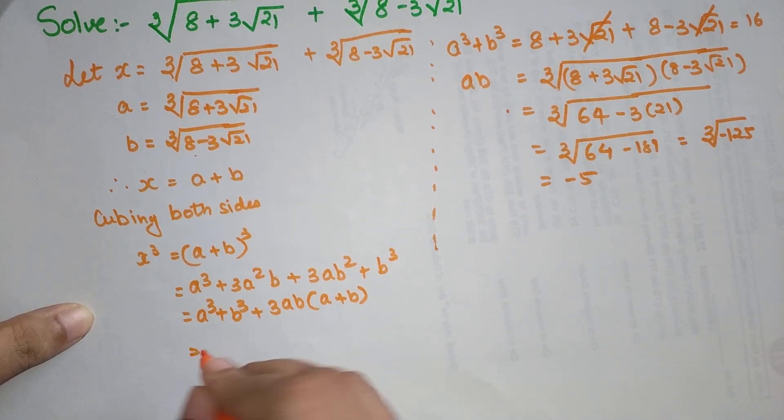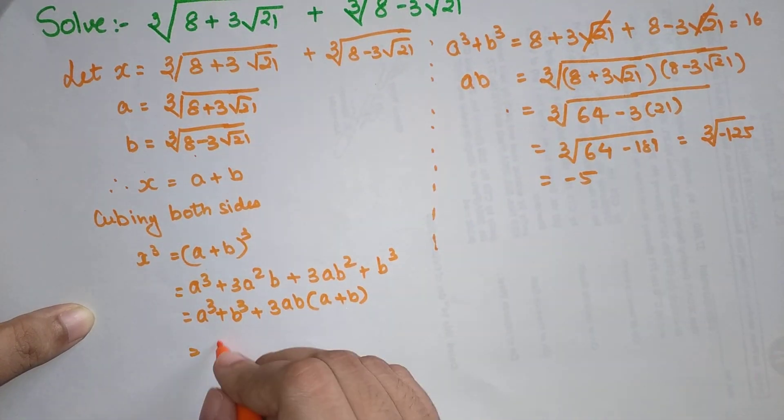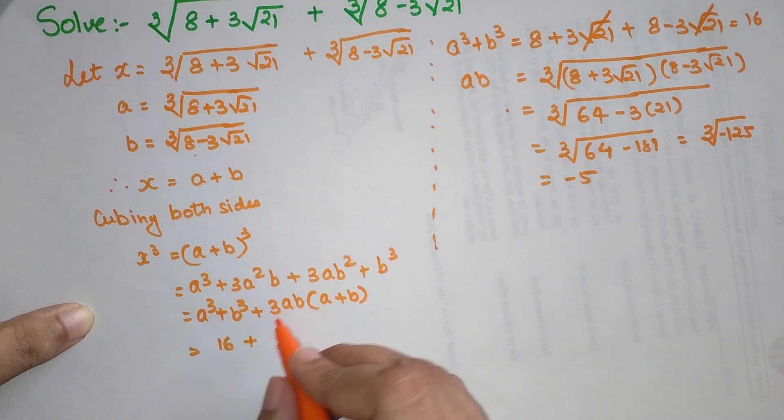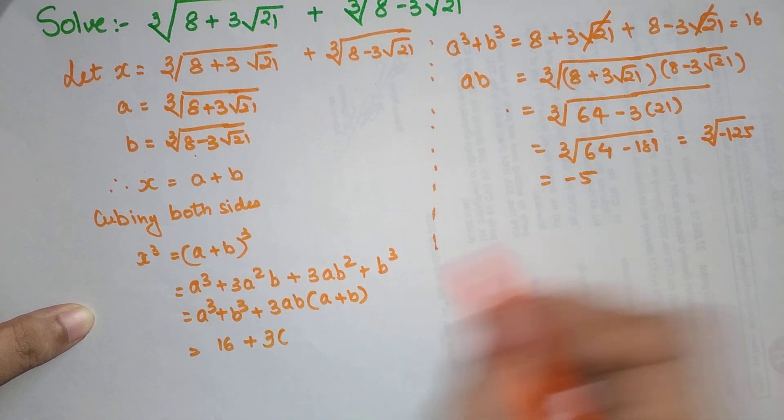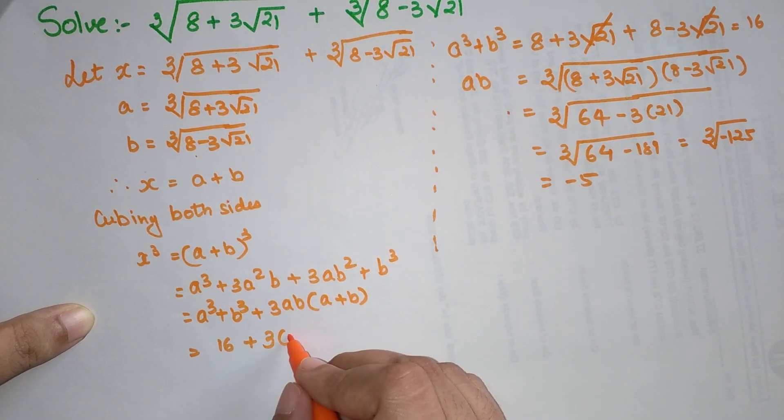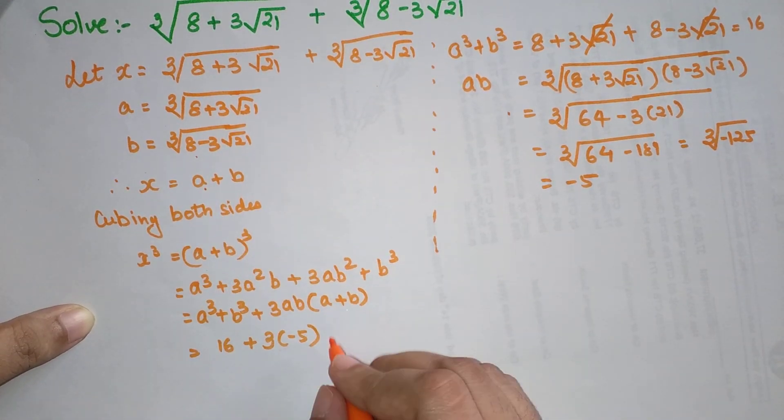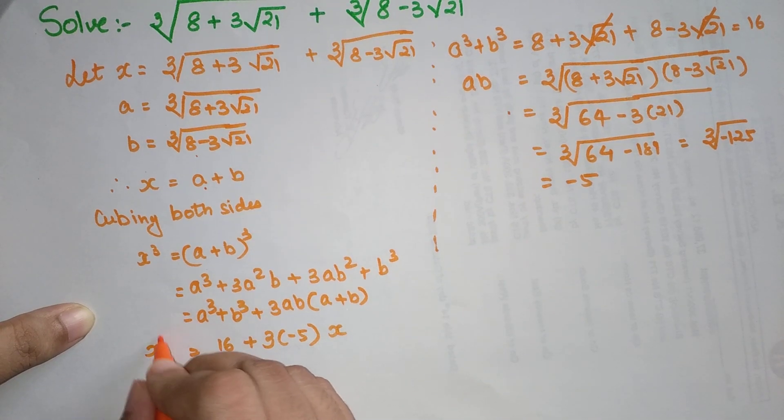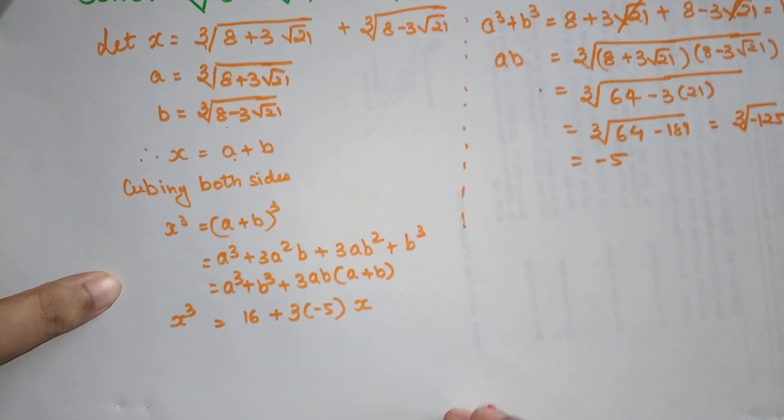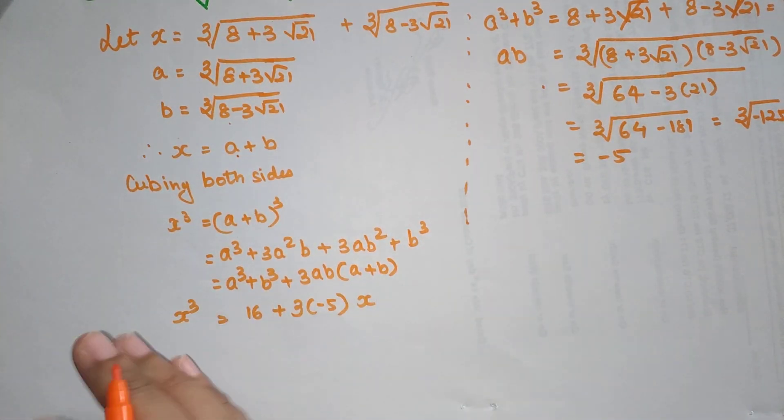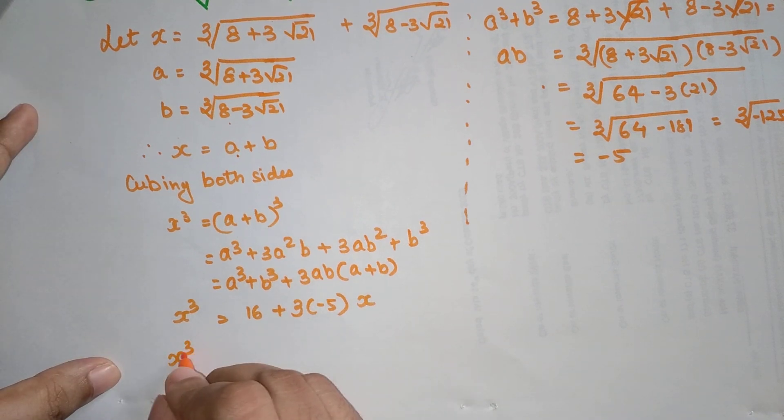Now over here we can substitute all of these. I can write a cube plus b cube as 16 plus 3 into ab as minus 5. Now over here we already know that a plus b was x, so I can write this as x. This is x cube. So now if I put everything on this side I can say x cube plus 15x minus 16 equals 0.